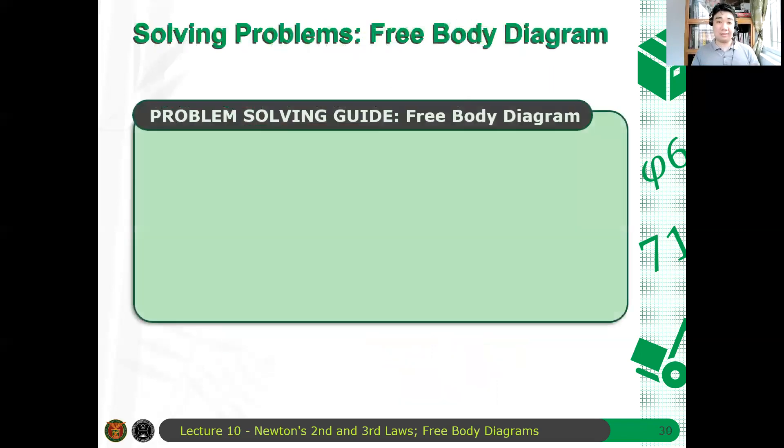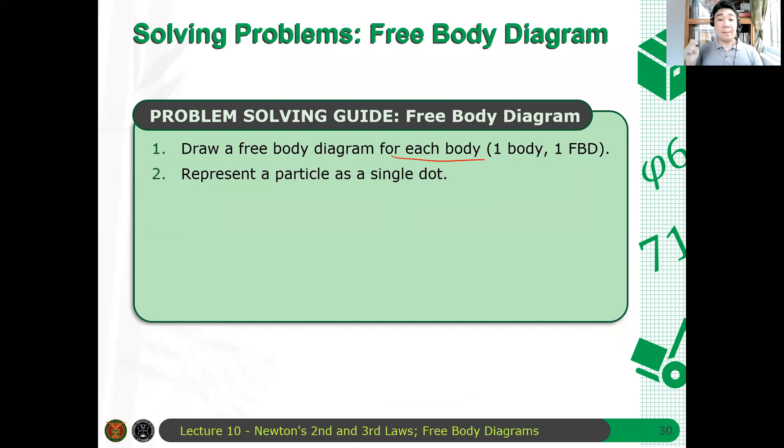So yan. Ano yung mga guidelines diyan? We have a problem-solving guide in drawing your free-body diagrams. Kasi maraming nalilito pa rin dito. So first, draw a free-body diagram for each body. Huwag masyadong ambitious. One body, one free-body diagram. Especially for those who are beginners. Doon sa mga nalilito pa, one body, one free-body diagram. And then, represent a particle as a single dot. Again, we're talking of particles here. Therefore, isang dot lang makikita diyan.